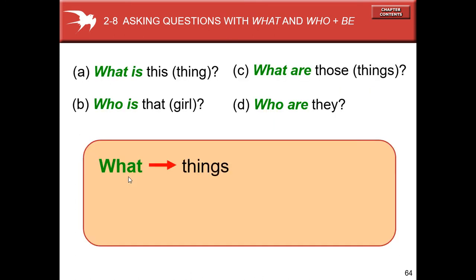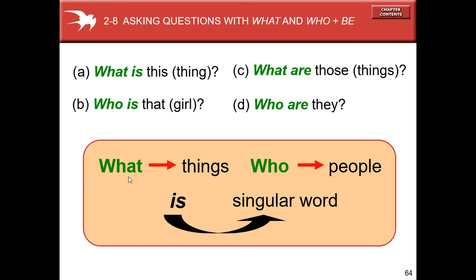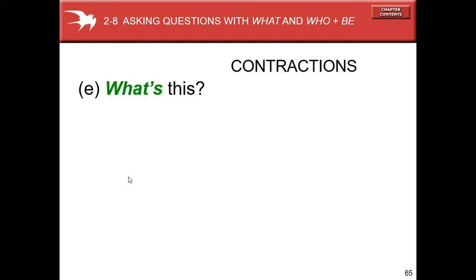What is, who is, what are, who are. What for things and who for people. Is is singular verb, are is a plural verb.